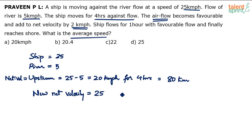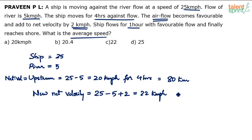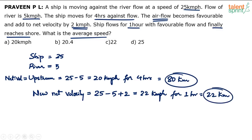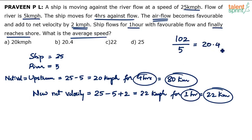The new net velocity is 25 (speed of the ship) minus 5 (speed of the river) plus 2, which becomes 22 kilometers per hour. The ship flows for 1 hour with favorable flow, so it covers 22 kilometers and finally reaches the shore. Average speed is total distance divided by total time: 80 plus 22 is 102, divided by 4 plus 1 which is 5 hours. 102 by 5 is 20.4 kilometers per hour — option B.